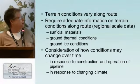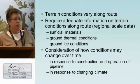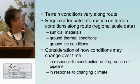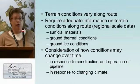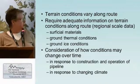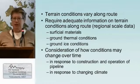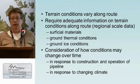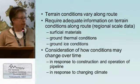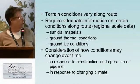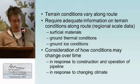Variable terrain conditions along the route require good regional-scale information. We have to know something about the surficial materials, the ground thermal conditions, and the ground ice conditions. We also have to consider how those conditions may change over time. As one of the breakout groups noted this morning, what's really important is the spatial and temporal variability of the permafrost conditions. We have to consider that those conditions will change both in response to construction and operation of the pipeline — or whatever infrastructure you're talking about — and also in response to a changing climate.